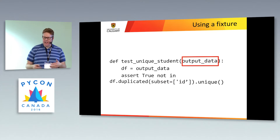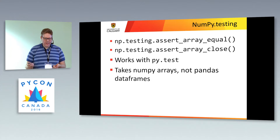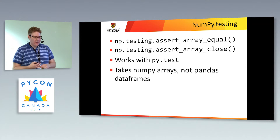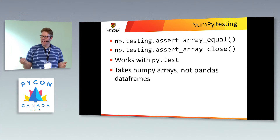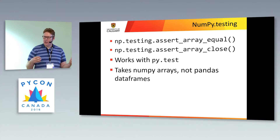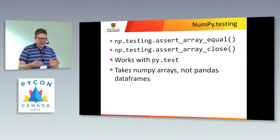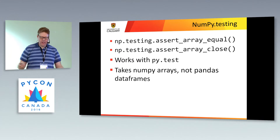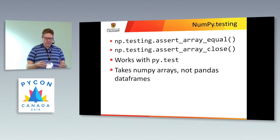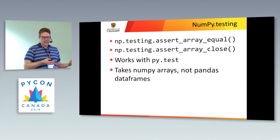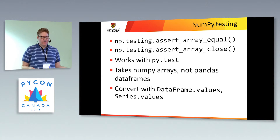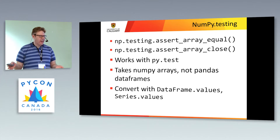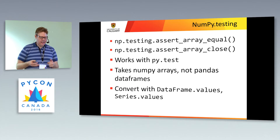For testing NumPy arrays or Pandas data frames, you can also use NumPy testing, which has a bunch of methods for comparing arrays and even has methods for checking if values are close enough. If you're working with numerical data you might consider values equal if they're very close, accounting for rounding issues. It works really well with PyTest — you just use those instead of the regular assert. The one wrinkle if you're using Pandas is that NumPy testing takes NumPy arrays, not Pandas data frames, but the `.values` method on a data frame or series will return the underlying NumPy array.